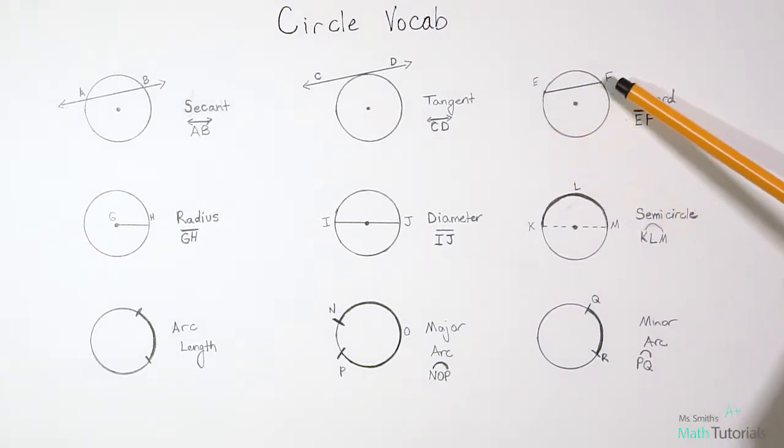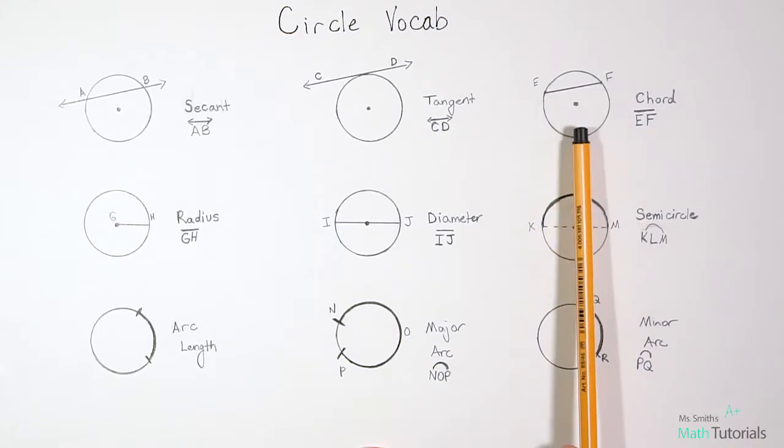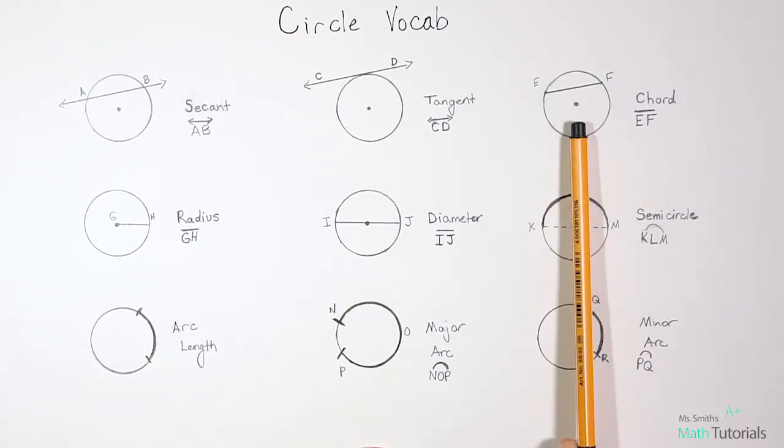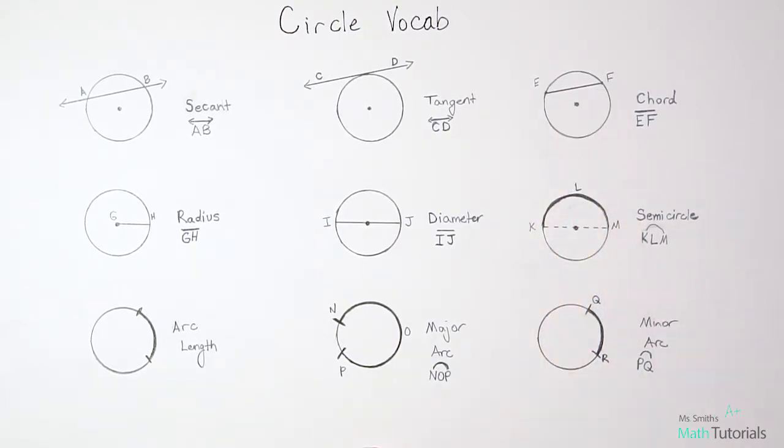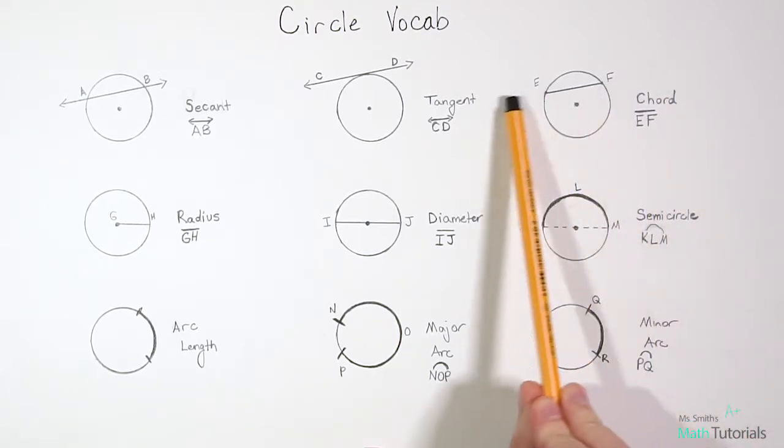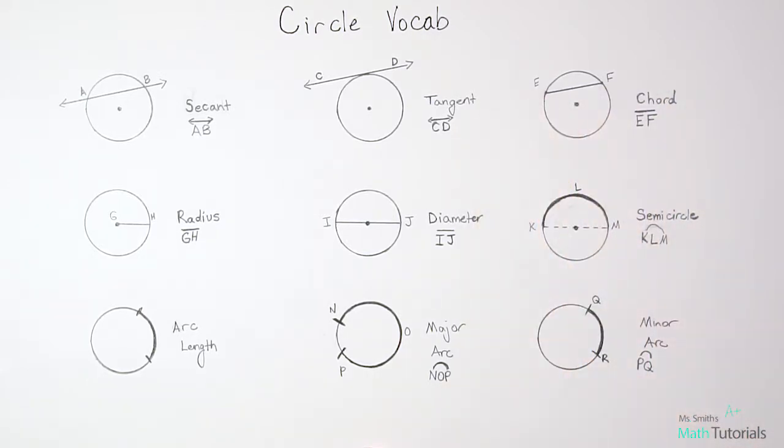A chord, it's very important to note, does not cut through the center of the circle. That would be something different. So a chord is from one edge of the circle to the other, but it does not cross the center. It is a segment, though. It doesn't continue on with arrows. If it continued on with arrows, then it'd be a secant.